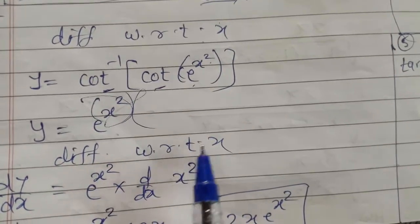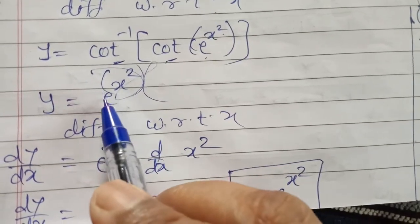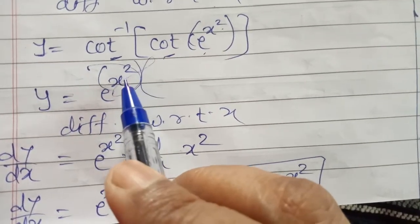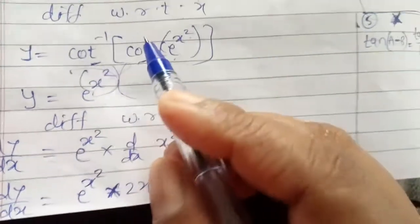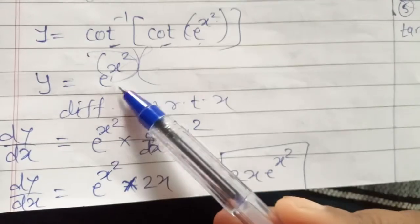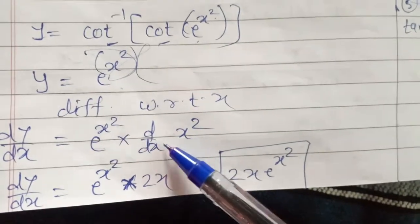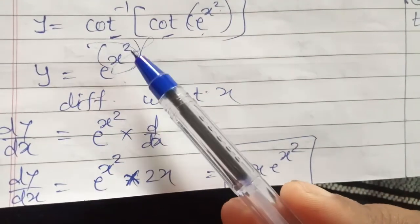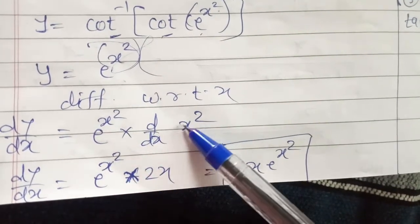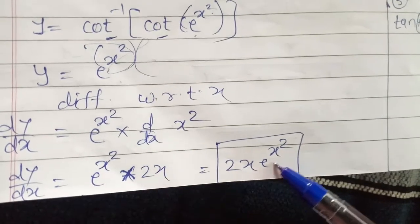Now taking the derivative — differentiating with respect to x. dy/dx equals derivative of e raised to x square. The derivative of e raised to x is e raised to x, but here we have e raised to x square, so we treat x square as x. The derivative of e raised to x square is e raised to x square, multiplied by the derivative of x square which is 2x. So the answer is 2x·e raised to x square.